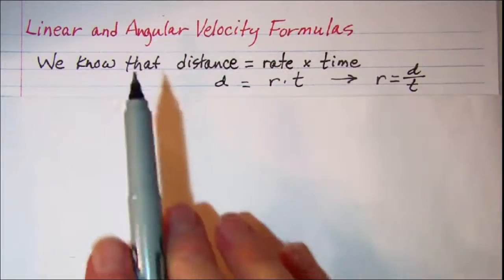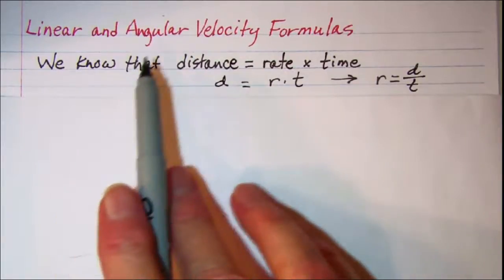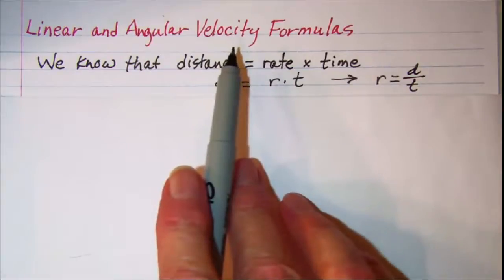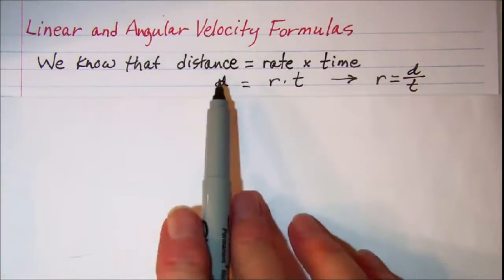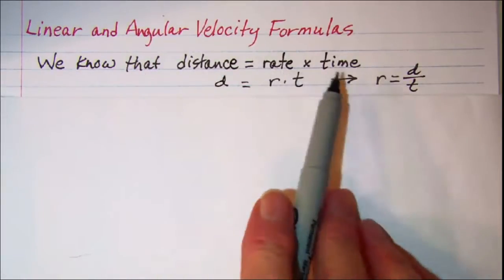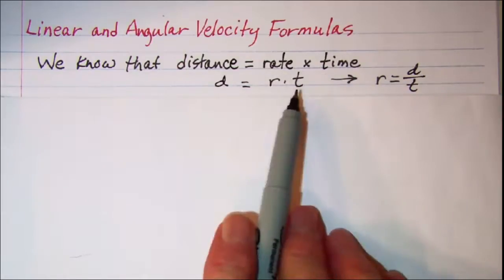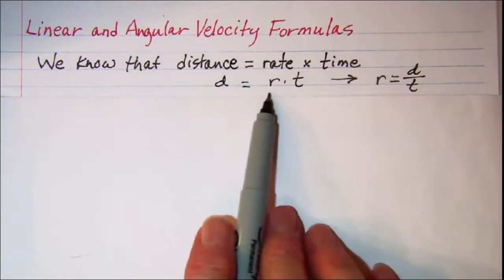In this video we will be developing the formulas for linear and angular velocity. First, we know that distance is equal to rate times time. We can write that with the variables d equals r times t.